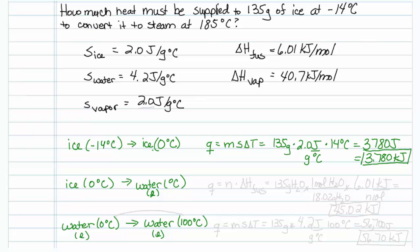The next item is a phase change, and the heat associated with a phase change is equal to the number of moles times the heat of fusion, because we are going from ice to liquid water. So I will need to take my 135 grams of water, and divide by the molar mass of water, which is 18.02 grams of water per 1 mole of water, and multiply it by the heat of fusion, which turns out to be 6.01 kilojoules per mole of water. So I will type that into my calculator, and that answer comes out to be 45.02 kilojoules.